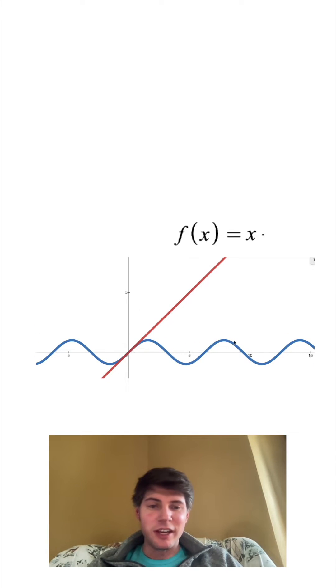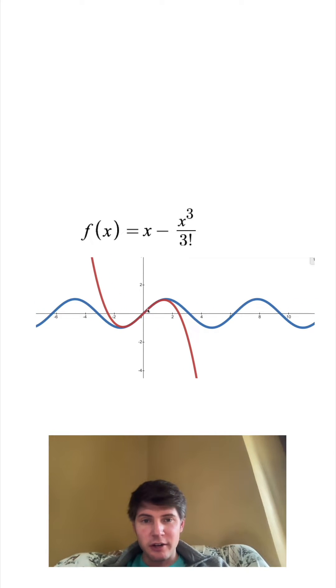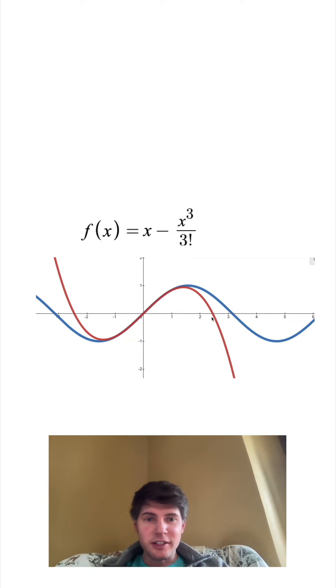we can see it starts to deviate away from what sine actually is. So here it is for two terms of the polynomial, and you can see it's more accurate for a further distance. It's starting to take the shape of this, and it's because of the cubic term that we added.